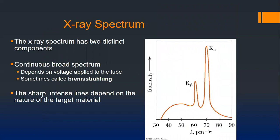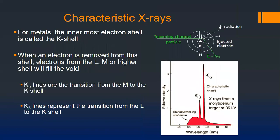Here is the x-ray spectrum. The k-alpha and k-beta peaks are transitions of inner electrons, whereas the much broader peak is bremsstrahlung radiation from electrons slowing down in the metal. An incoming electron accelerates around the atom to produce bremsstrahlung radiation, or it can knock off an inner electron to produce these characteristic x-rays.